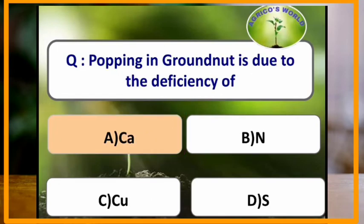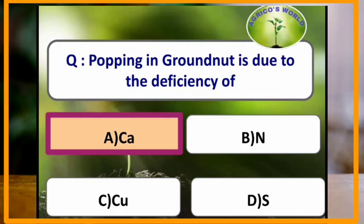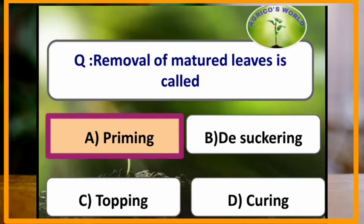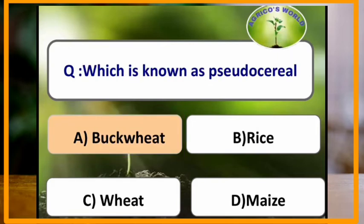Popping in groundnut is due to the deficiency of which element? Popping in groundnut is due to the deficiency of calcium. Removal of matured leaves is called priming — priming is a term related to tobacco.